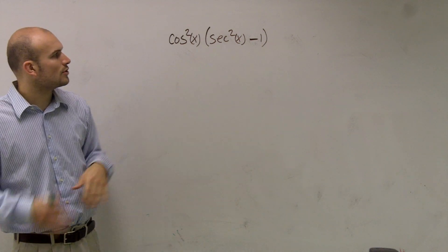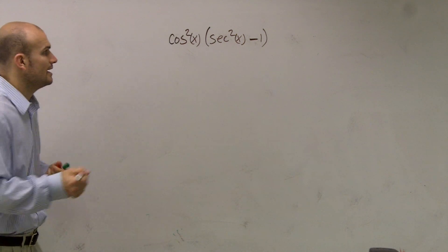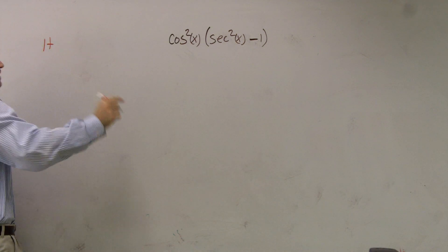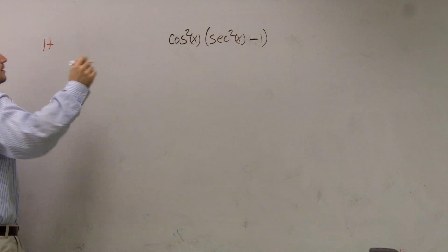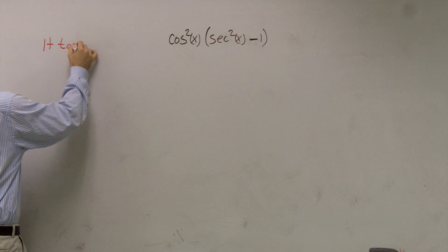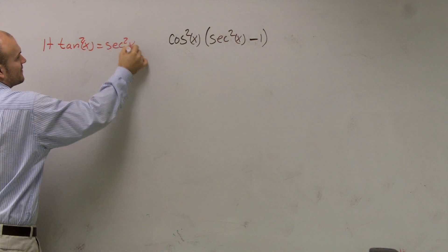So how do I transform secant squared of x minus 1? Well, I need to know my trig identity. And my trig identity for this, if you remember, is going to be 1 plus tangent squared of x equals secant squared of x.